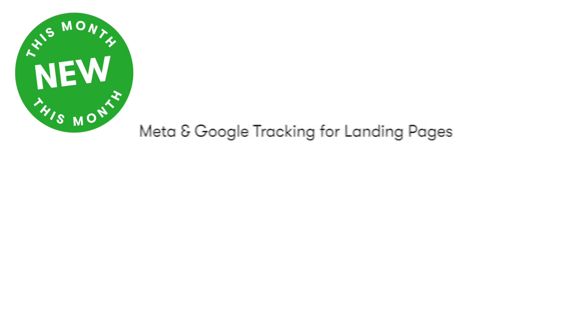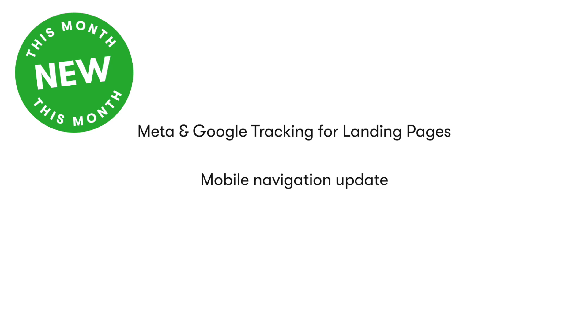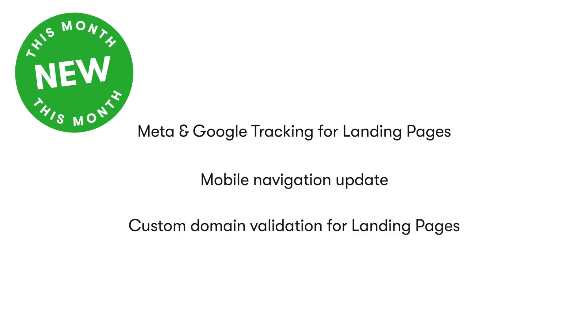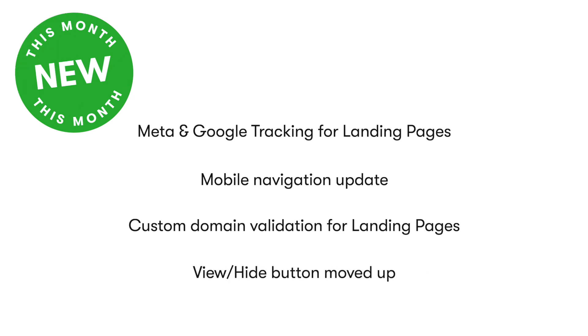Hey Keep peeps! Welcome to the release report for the month of July. We have some great things coming your way. Take a look at what we'll go over today. Improvements include the addition of Metapixel and Google ID tracking to your landing pages, an update to the mobile view of your Keep app, new custom domain validation for landing pages that help prevent entering an erroneous domain, and better visibility of the contact group's view-hide feature.